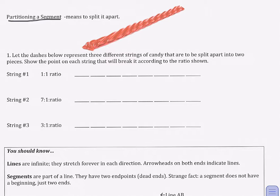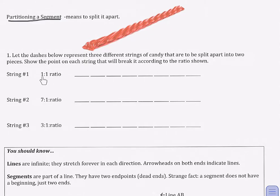Sometimes life isn't fair. Let's look at question number one together. It says, let the dashes below represent three different strings of candy, and these candy strings are going to be broken or split apart into two pieces according to the ratio that you see next to each string. It says to show the point on each string that will break it according to the ratio shown. So the first one is meant to be kind of easy — the ratio is one to one.